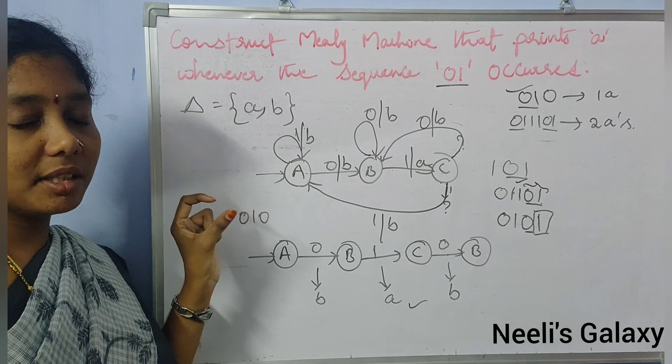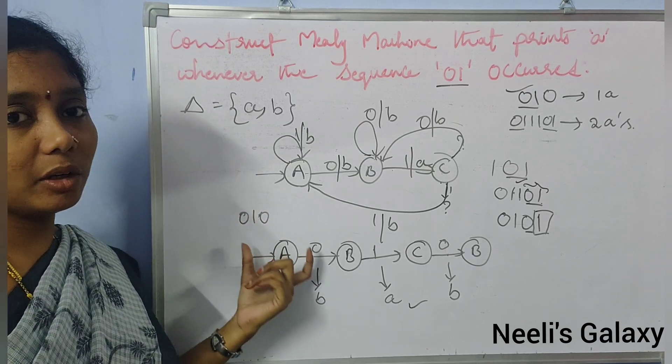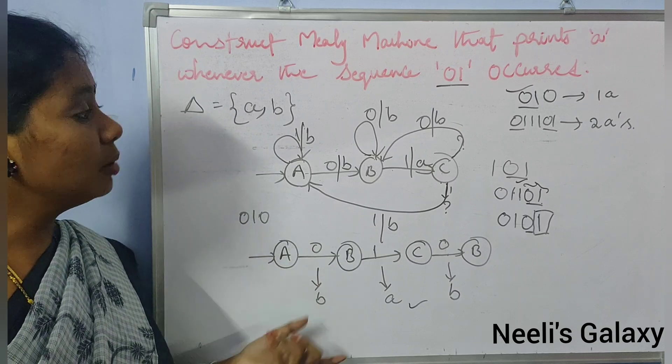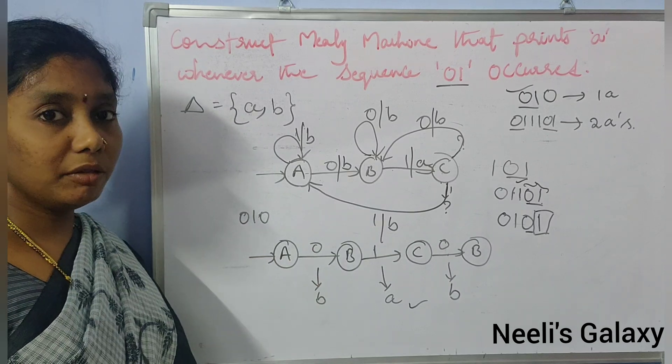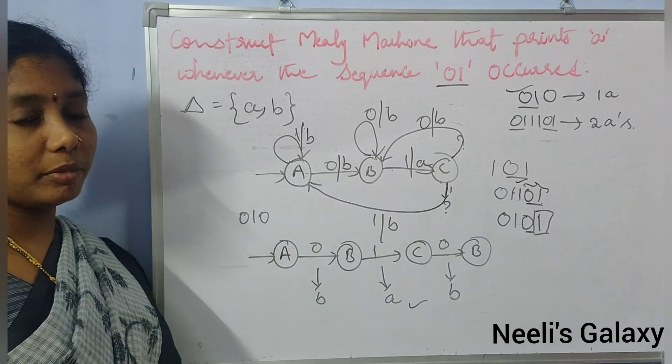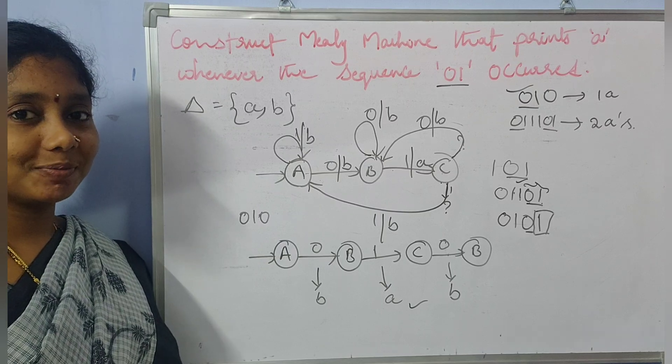The 0-1 sequence occurs 1 time. So this is the required Mealy machine for the given problem. Thank you so much for watching the video.